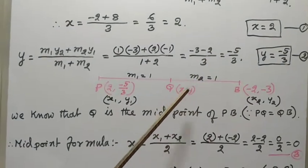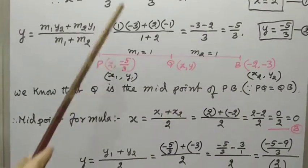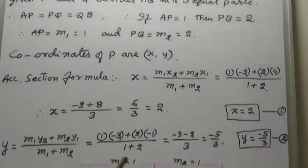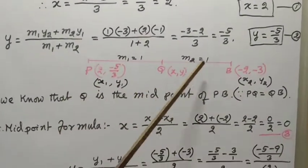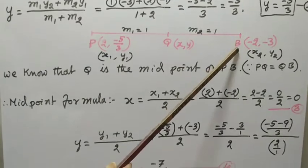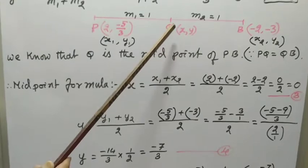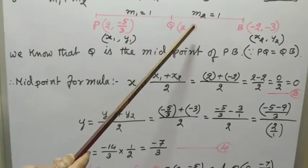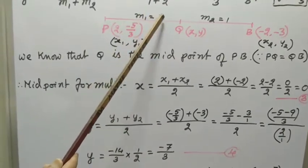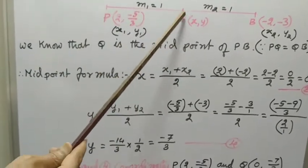Now let us find the coordinates of Q. Consider the segment PB, where P coordinates are (2, -5/3) and B coordinates are (-2, -3). We have to calculate coordinates of Q. We know that PQ equals QB, therefore Q is the midpoint of PB. So M1 equal to 1 and M2 equal to 1, because PQ equal to QB.